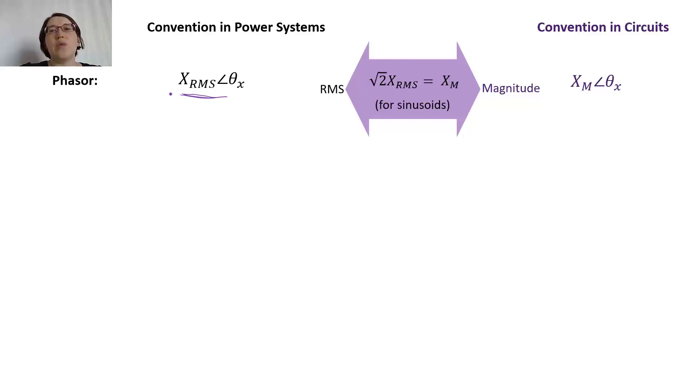When we look at circuits, we also can have an AC input and we can analyze the circuit. But when we use that convention, we tend to use magnitude here instead. So magnitude is the amplitude of the sine wave, not the RMS value.